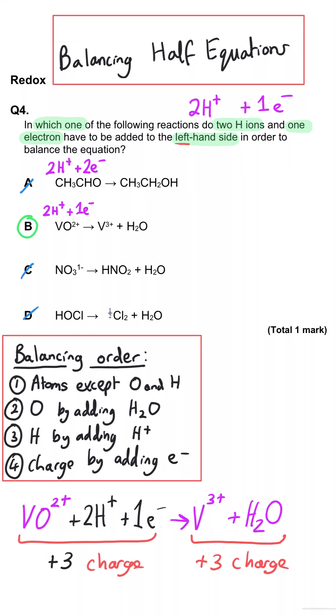In C, we actually need to add three hydrogen ions to the left-hand side, but only two electrons to make the total charge on the left equal to zero. And then in D, we need to add one hydrogen ion and one electron to balance them. And so B is correct.